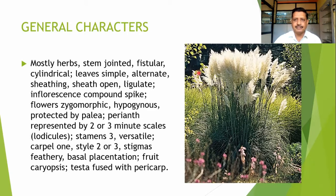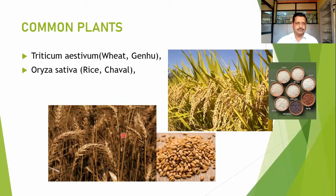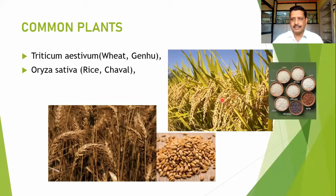Most inflorescences in grasses are feathery, as seen in Saccharum. Common plants in this family include wheat — Triticum aestivum, commonly called gehu — where the awns and grains of Triticum can be observed. Then Oryza sativa, commonly known as rice or chawal, with its shoots, inflorescences, and varieties shown here, particularly cultivated in most regions of India.